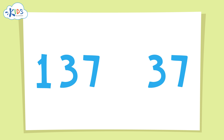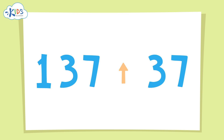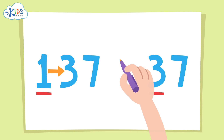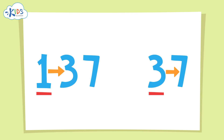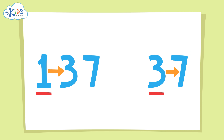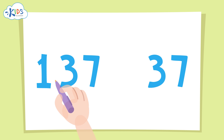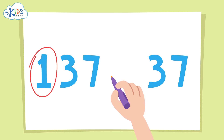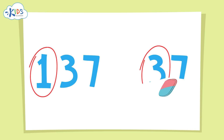When we want to round a number to the nearest ten or hundred, we have to look at the place to the right to help decide whether to round up or down. I like to underline the place I'm rounding to and draw an arrow to the place that will tell me whether to round up or down. Even though both of these numbers have 37 in them, we're going to round them differently: we're rounding 137 to the nearest hundred and 37 to the nearest ten.